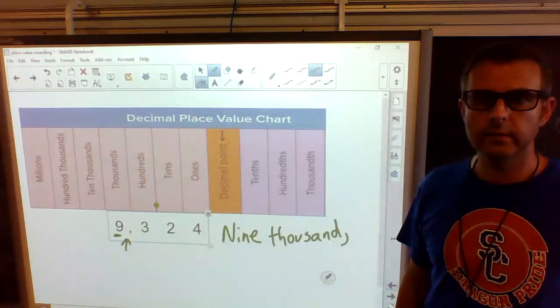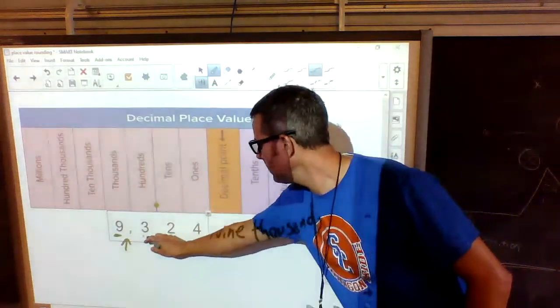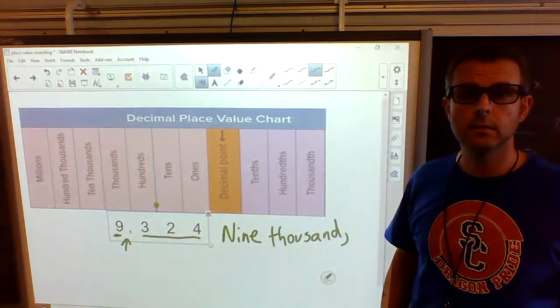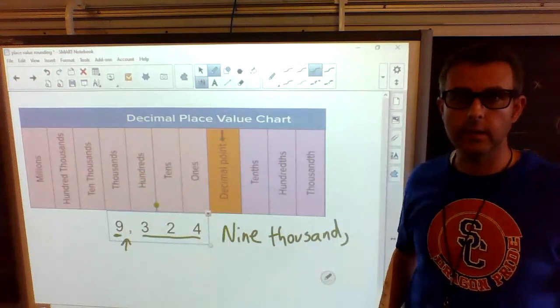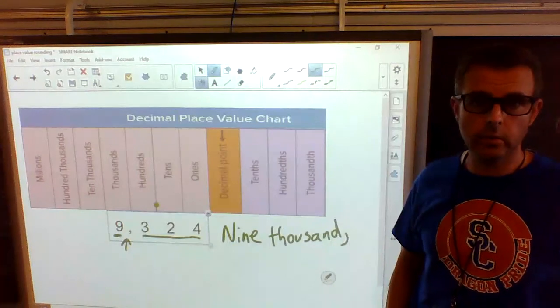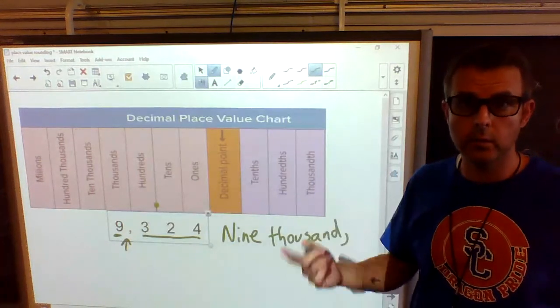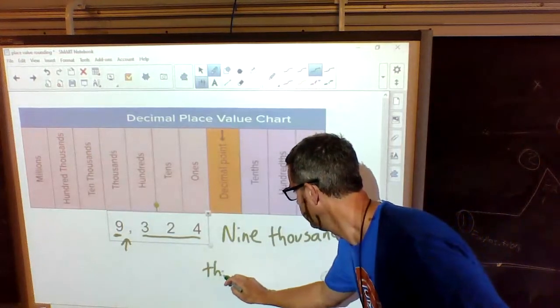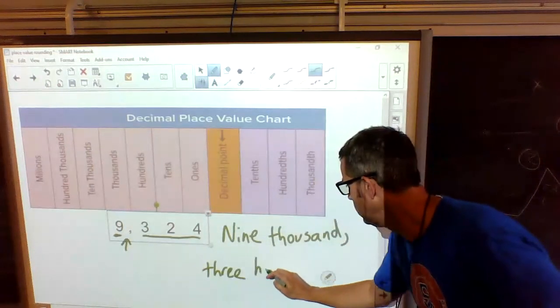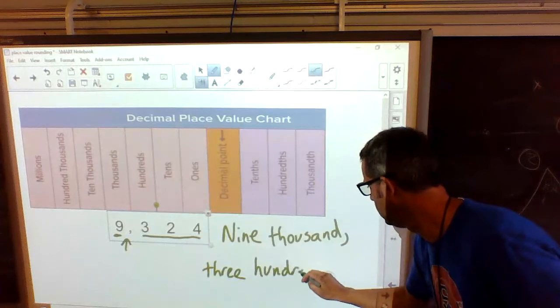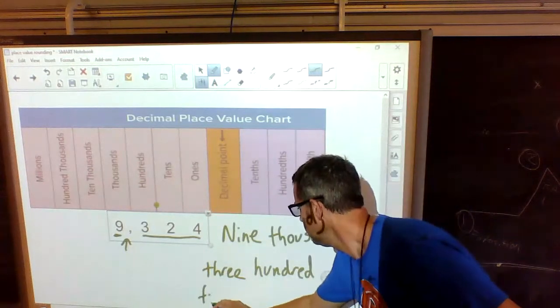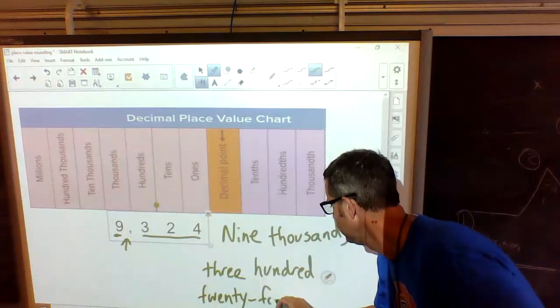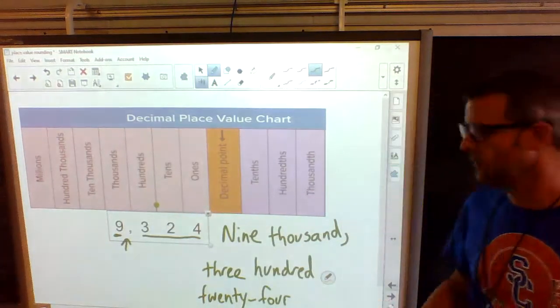And then right after we have our nine, we have our comma there. So what do we have to put in? We have to put the comma after nine thousand. What's left? We have this number right here. How do you say that number right there? Yep, I heard somebody else say it. Three hundred twenty-four. So we have to write that. Three hundred twenty-four. We're finished.